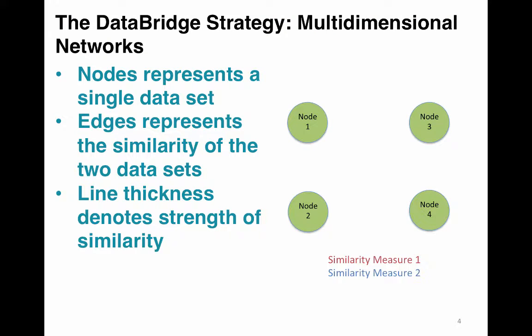Each node in the network represents a dataset. Edges between the nodes represent relationships between two datasets and are intended to denote a similarity measure. The similarity measure is based on common attributes associated with each dataset. A strength can be associated with each relationship, and by analyzing the network for datasets that are strongly linked, communities can be identified.